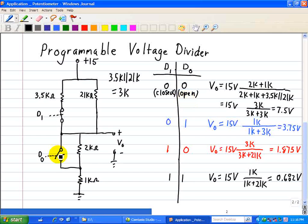D0 is closed means that we bypass the 2 kiloohm resistor, so we have 1k. And D1 is open, so we just have the 21k. So 1k divided by 1k plus 21k times the 15 volts yields an answer of 0.682 volts.